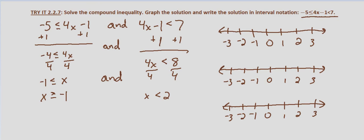For the left hand side, x is greater than or equal to negative 1, so at negative 1 we'll have a closed circle or square bracket, and since it's greater than or equal to, it goes to the right. For the right hand side, x is less than 2, so we have an open circle or parenthesis at x equals 2, and since it's less than, we go to the left.